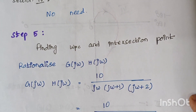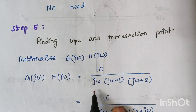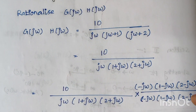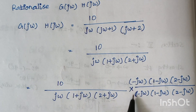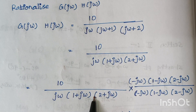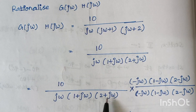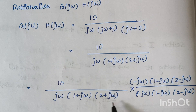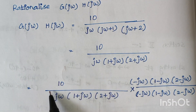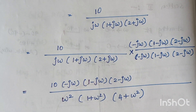In step 5, we find omega_pc and the intersection point on the negative real axis. We rationalize by substituting S as j omega, then multiply and divide by conjugate terms: minus j omega, one minus j omega, and two minus j omega — changing the sign of each denominator factor — so that the original value is preserved.